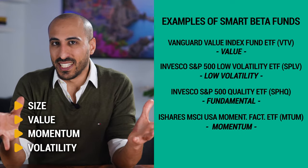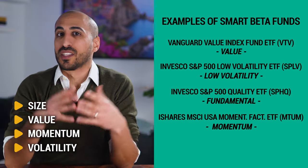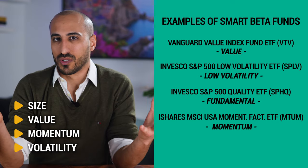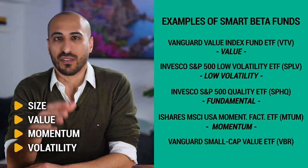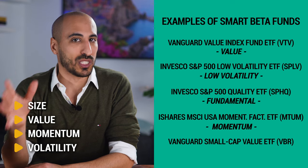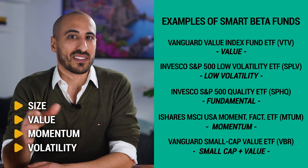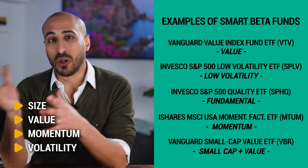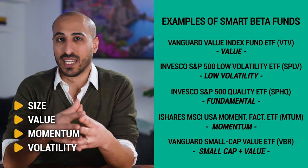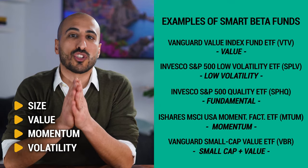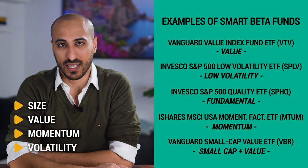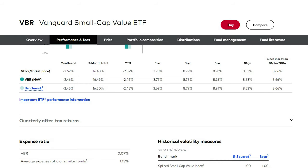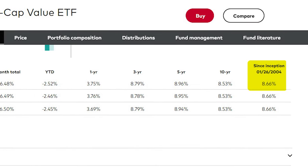There are also smart beta ETFs that combine multiple factors. One of my favorites is VBR, the Vanguard Small-Cap Value ETF, which combines the two factors — small cap and value — in one single ETF, with a cheap expense ratio of just 0.07%.